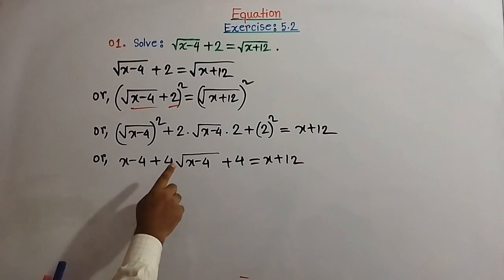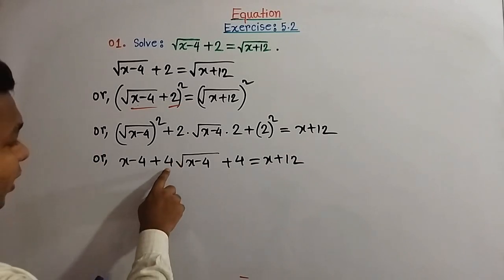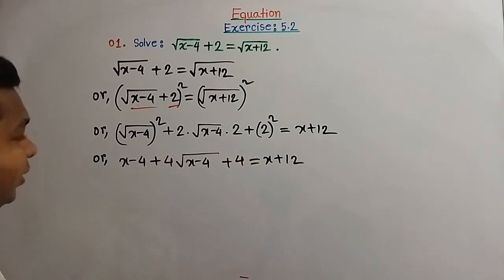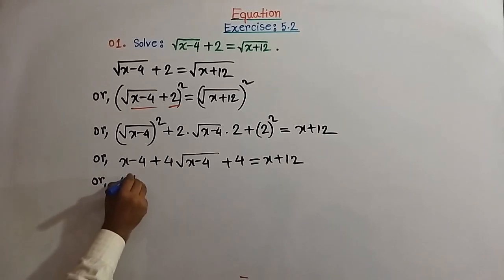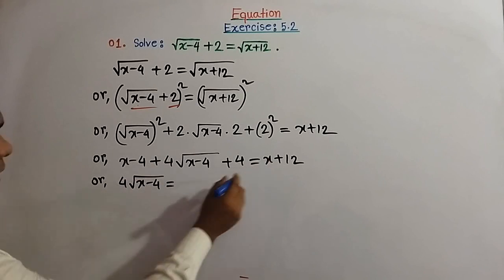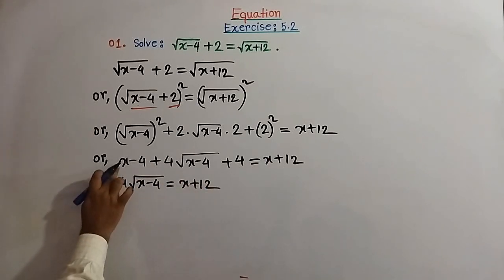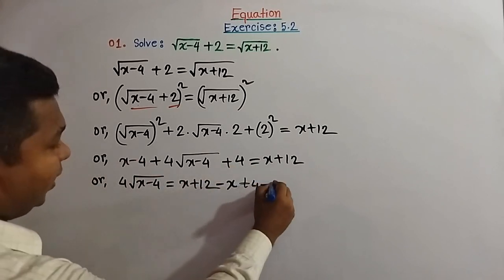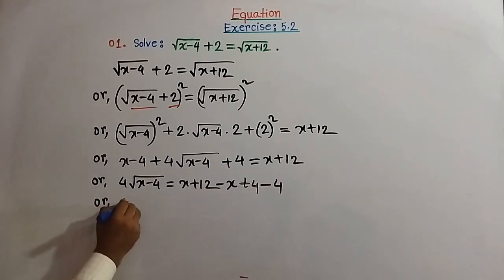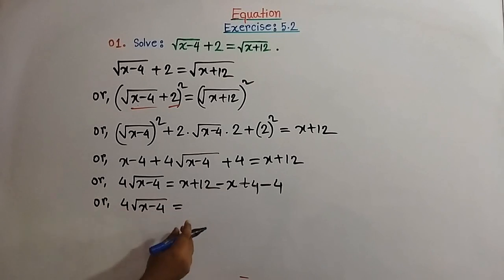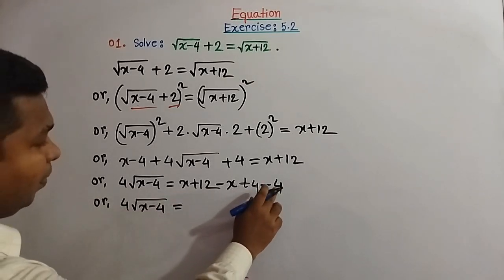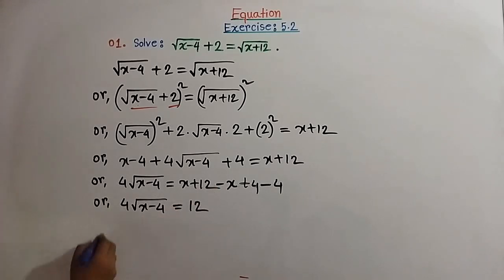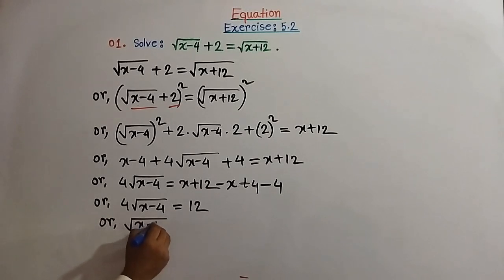In this equation there is only one term involving radicals, that is 4 times square root of (x minus 4). We put this term on one side and all other terms on the other side. So: 4 times square root of (x minus 4) equal to x plus 12 minus x plus 4 minus 4. Here x minus x cancels and 4 minus 4 cancels, leaving 12. So 4 times square root of (x minus 4) equal to 12.